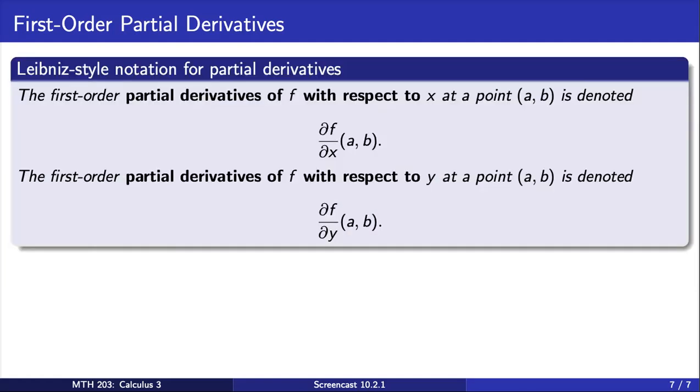Due to the connection between one-variable derivatives and partial derivatives, we will often use Leibniz-style notation to denote partial derivatives as denoted here. Again, this is just another notation for the first-order partial derivatives that we defined in this screencast.